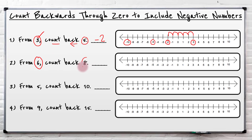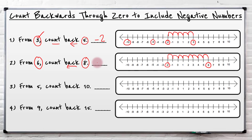So let's look at a couple more examples. From six, count back eight — just the same principle. Counting back means we're going to take away eight from six. So let's find our six and count back eight jumps: one, two, three, four, five, six, seven, eight. And again my answer is negative two. So I've gone beyond zero into the negatives, counting back eight from six which takes me to negative two.